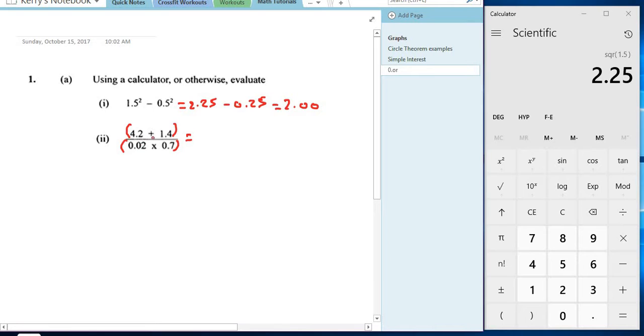So first thing I'll do is calculate my brackets. So we have 4.2 plus 1.4 which is going to give us 5.6 over, and we have 0.02 by 0.7. You'll plug that into your calculator and that should give you 0.014.